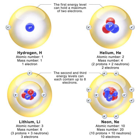Other fusion reactions produce much less energetic neutrons. DD fusion produces a 2.45 MeV neutron and helium-3 half of the time, and produces tritium and a proton but no neutron the rest of the time. D-³He fusion produces no neutron.